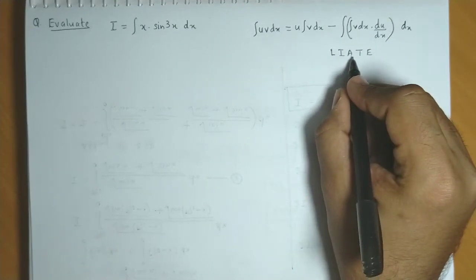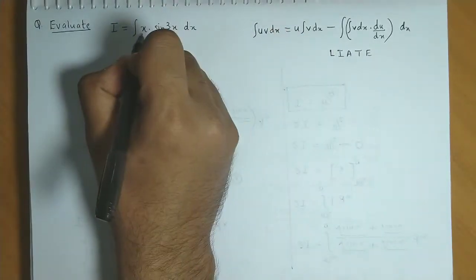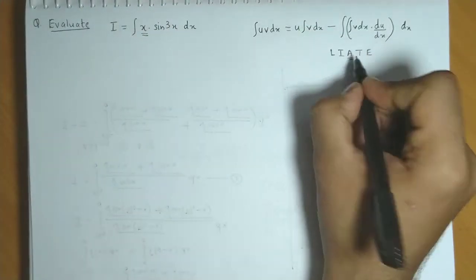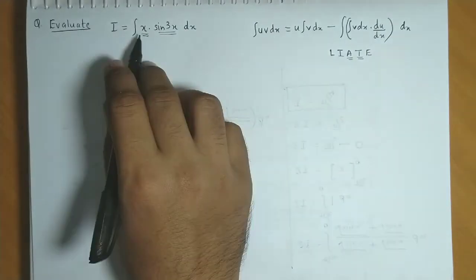That is Logarithmic, Inverse, Algebraic, Trigonometric, and Exponential. Here the first term is algebraic, and the second term is trigonometric. So the order is perfect.